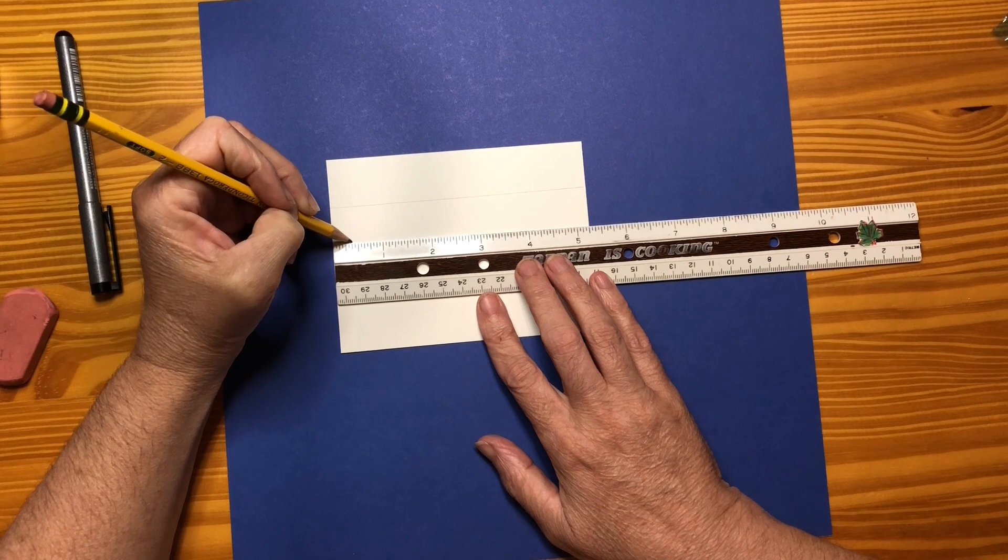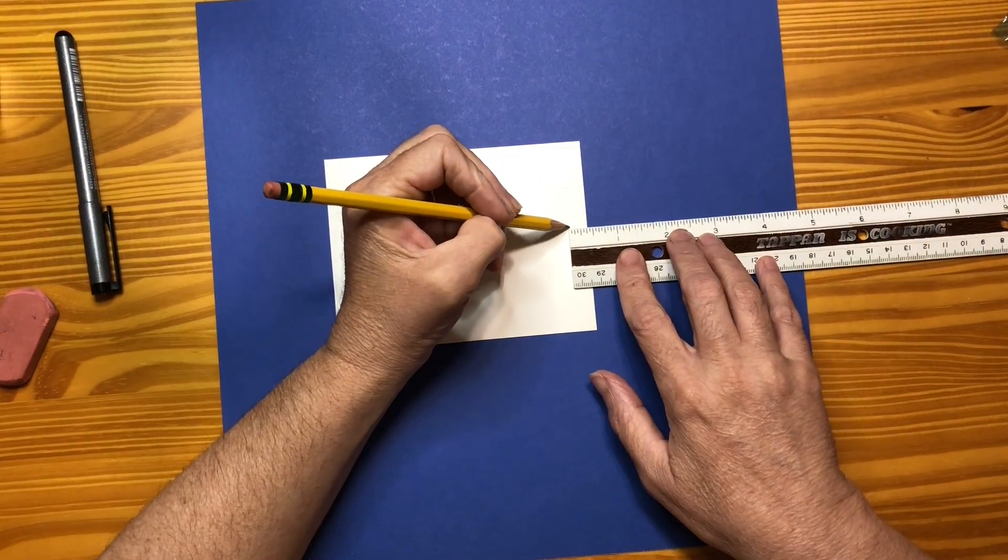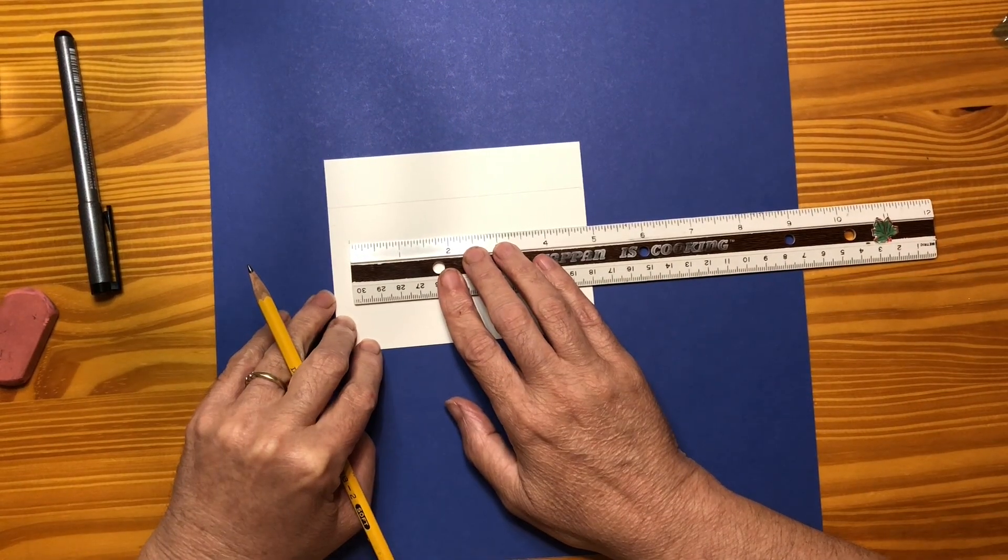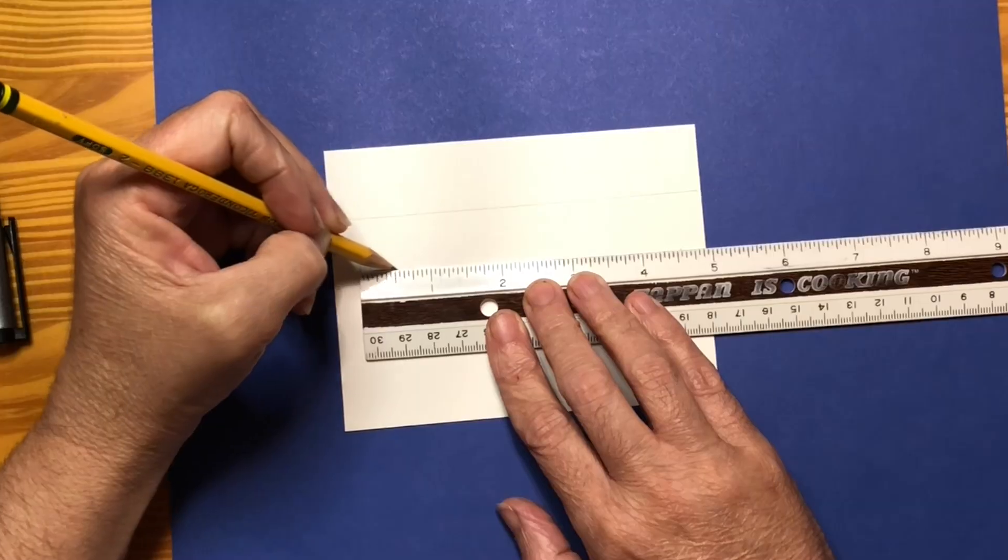So I need two of those. One, two, three. There we go. So that's going to be the first one. And then on this side one, two, three. I know I have to end over there. So from here I'm going to do a three quarter inch line. Three quarters.